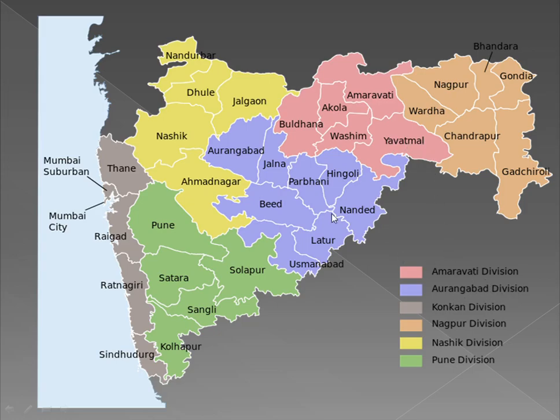Aurangabad division comprises the districts of Aurangabad, Jalna, Parbhani, Hingoli, Beed, Nanded, Latur, and Osmanabad.